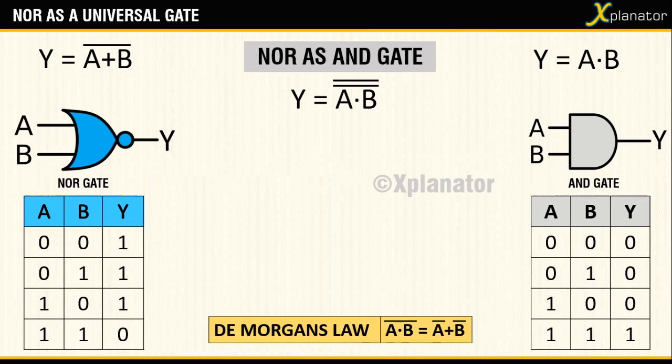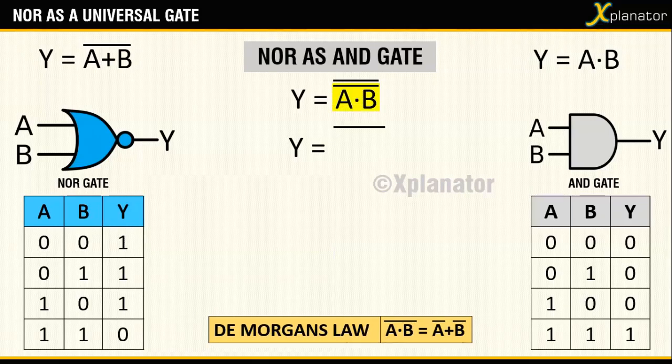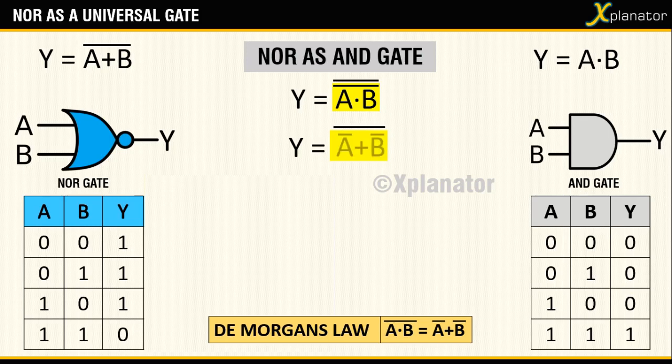Using De Morgan's law you can now reduce the expression. Keep the topmost bar as it is. And this section of the equation which is shaded in yellow can be reduced to A complement plus B complement.